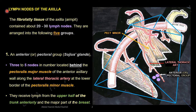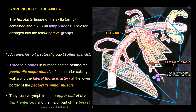Lymph nodes of the axilla. Let's see the schematic diagram of the right axilla seen from in front. This shows the anterior wall, posterior wall, medial wall, base, and apex of the axilla, along with the first right rib. The fibro-fatty tissue of the axilla — the armpit — contains about 20 to 30 lymph nodes, arranged into five groups.